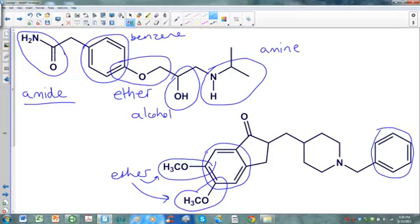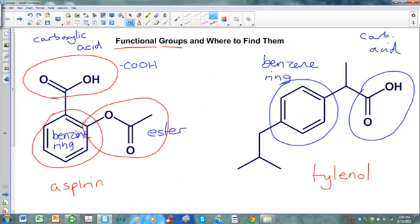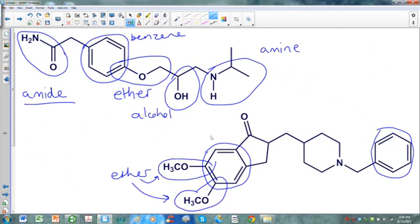Now, notice here, we had a group with a C double bond O, and that was an amide. That had a nitrogen on the end. This C double bond O had an OH. This C double bond O had an O connected to a carbon. What about a C double bond O that's just connected to two other carbons? So we've got this here. This is a functional group called a ketone. This one right here.